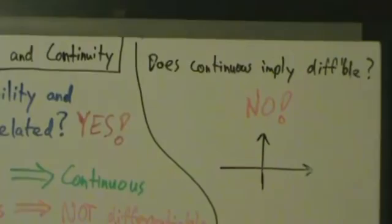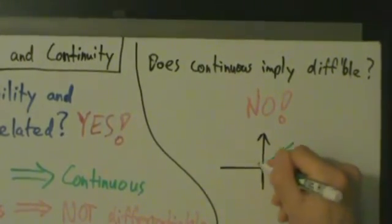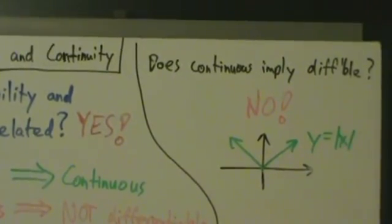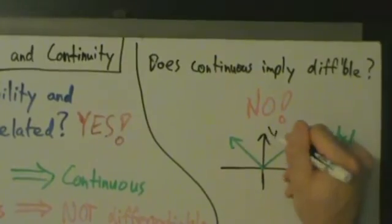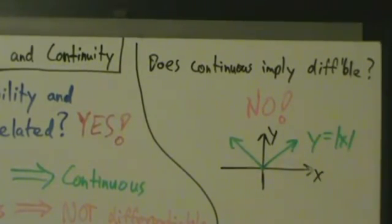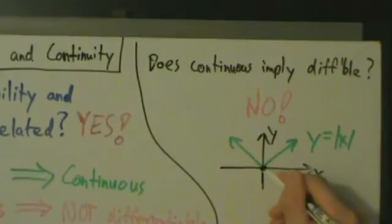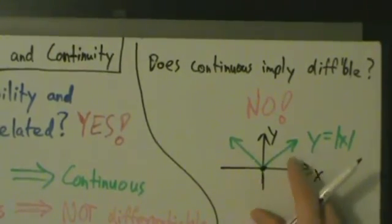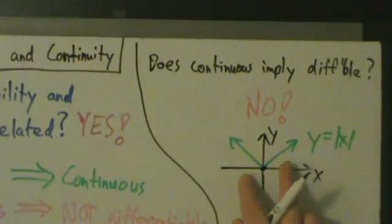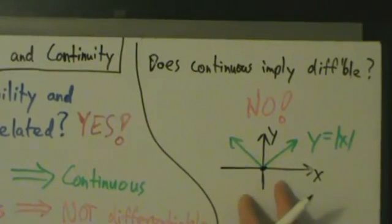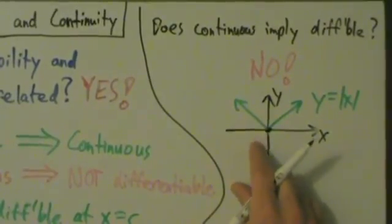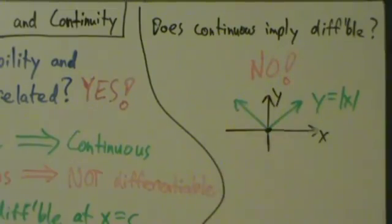Let's draw the absolute value function: y equals absolute value of x. The derivative at zero does not exist. But this function is continuous at zero — the limit as x goes to zero from the left and from the right both exist, they're equal to each other, and they're equal to the function value at x equals zero. So this function is continuous, but the derivative there does not exist. Continuous does not imply differentiable.